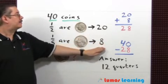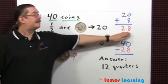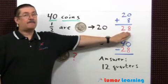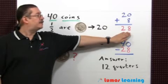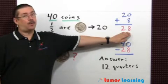First, add up these values. 20 plus 8 is 28. But be careful, this isn't the final answer. These are the nickels and dimes. We want quarters. So subtract 28 from the original 40 coins to get the final answer of 12 quarters.